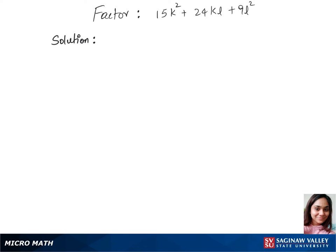Let's factorize this trinomial. We'll first bring out 3 since 3 is a common factor in all those terms. So 3 times 5k square plus 8kl plus 3l square.